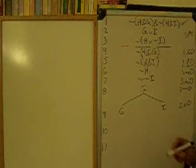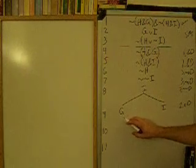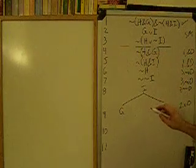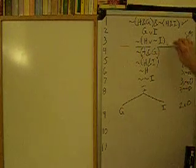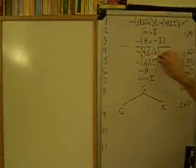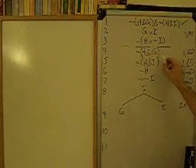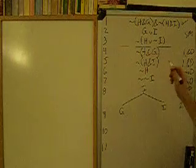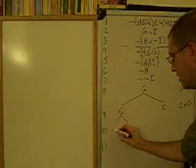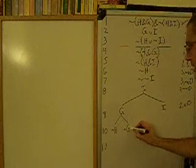So we have G and I as the two possibilities. Under G we're now going to say: it is not the case that H, it is not the case that G, from line four — negated ampersand decomposition. This says it is not the case that H and G occur, which means either H fails or G fails, so let's put those possibilities out.